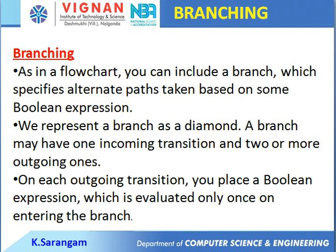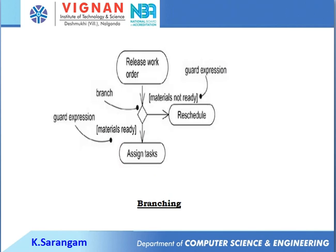In a flow chart you can include a branch, which specifies alternate paths taken based on some boolean expression — either true or false. A branch is represented as a diamond shape. A branch may have one incoming transition and two or more outgoing ones, on each of which you can place a boolean expression evaluated on entering the branch. For example: if material is ready, go to construction and assign task; if not ready, reschedule.